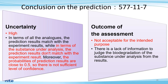This is our overall conclusion. For uncertainty, in terms of all the analogs, the prediction results match with the experiment results, while for the substance under analysis, the prediction results don't match with the experiment result. Moreover, the probabilities of prediction results are close to 0.5, so there is not a sufficient level of confidence. That is the reason why we concluded high as uncertainty, and the outcome of the assessment is not acceptable for the intended purpose. There is a lack of information to judge the biodegradation of the substance under analysis from the results.